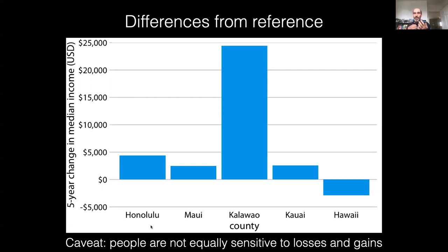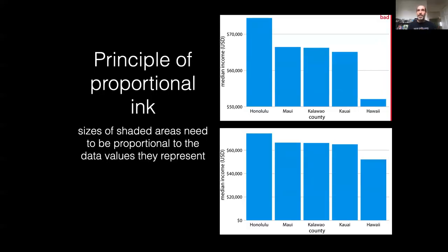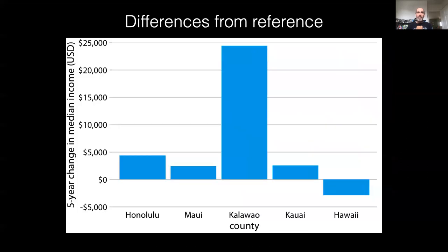Going back to that figure: the bottom panel is accurate, but if you can't really see the differences and you want to emphasize the difference — if I chose Honolulu as the reference group, everyone else's income would look negative. If I chose Hawaii as the reference group and reported the difference in median income relative to Hawaii, everyone would look positive.